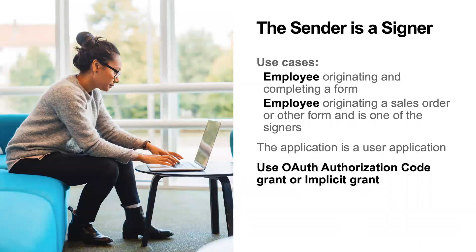There are cases where the sender is also the signer — for example, it might be an employee who is originating and completing a form, or originating a sales order and is one of the signers, while someone outside the company will sign via the embedded signing ceremony. In these cases, because the employee has their own DocuSign account, the application is what we call a user application and you would use OAuth authorization code grant or implicit grant.